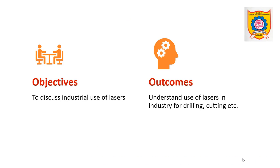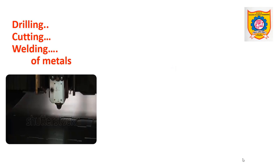At the end of this lesson, you will be able to understand the use of lasers in industry for drilling and cutting purposes. Lasers are widely useful in the industrial area for drilling and cutting, as high-powered lasers can be focused to a point so that intensity tremendously increases and is associated with high energy. This energy is utilized for precise cutting, drilling, or welding. There are several advantages associated with this technology.